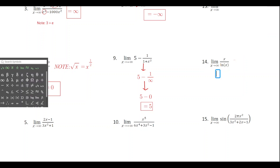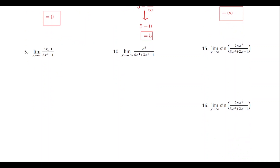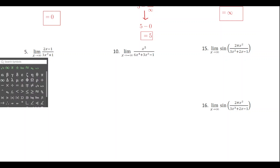For number fourteen, we've got x over the natural log of x. Going back to the notes on relative rates of change: a polynomial function grows faster than a logarithmic one. An exponential function grows faster than a polynomial, and a polynomial grows faster than a logarithm. So the numerator is growing at a faster rate than the denominator, making this a bigger-on-top scenario, and the limit equals infinity.